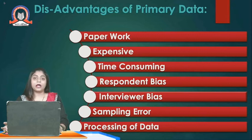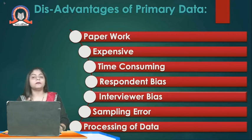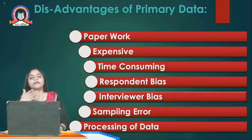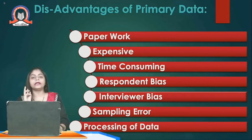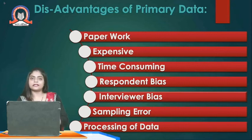Sampling error is another disadvantage — while deciding the sample, researchers must consider demographic factors like educational qualification, age, gender, marital status, and income group. After collecting primary data, there is also the challenge of data processing, which includes five steps: editing, coding, classification, tabulation, and graphical presentation. This processing stage is again time-consuming, making it another disadvantage of primary data.